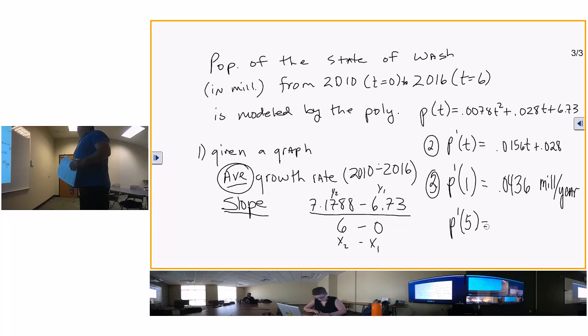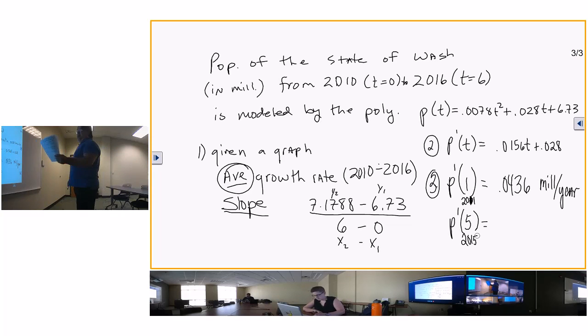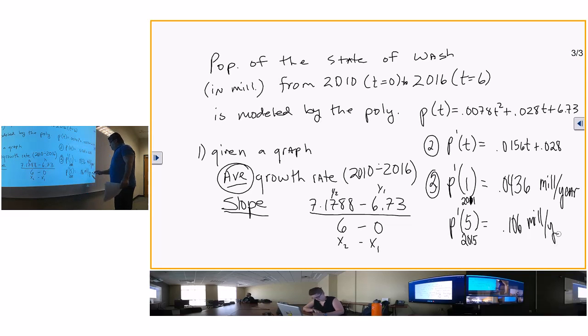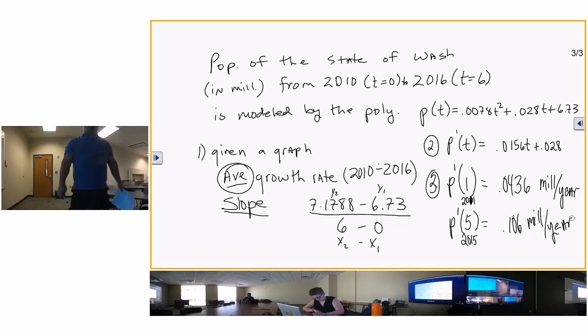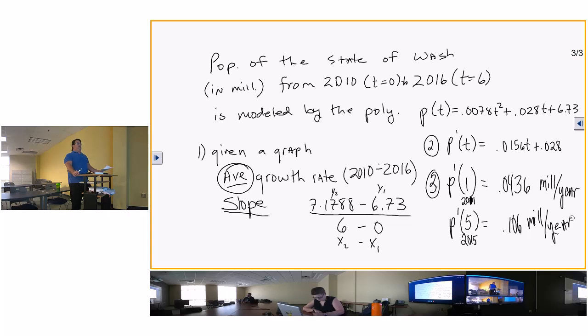And they're going to ask you for p prime of t next. So p prime of t - what is p prime of t? Well, go ahead and take your calculator. It'd be 0.0156t plus 0.028. And then they're going to ask you what is p prime of one. So what is the growth rate at 2011? You're going to plug one in there and you get 0.0436.